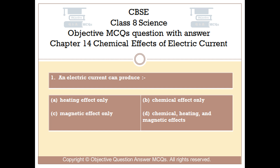Question number 1. An electric current can produce. Option A: heating effect only. Option B: chemical effect only. Option C: magnetic effect only. Option D: chemical, heating, and magnetic effects.